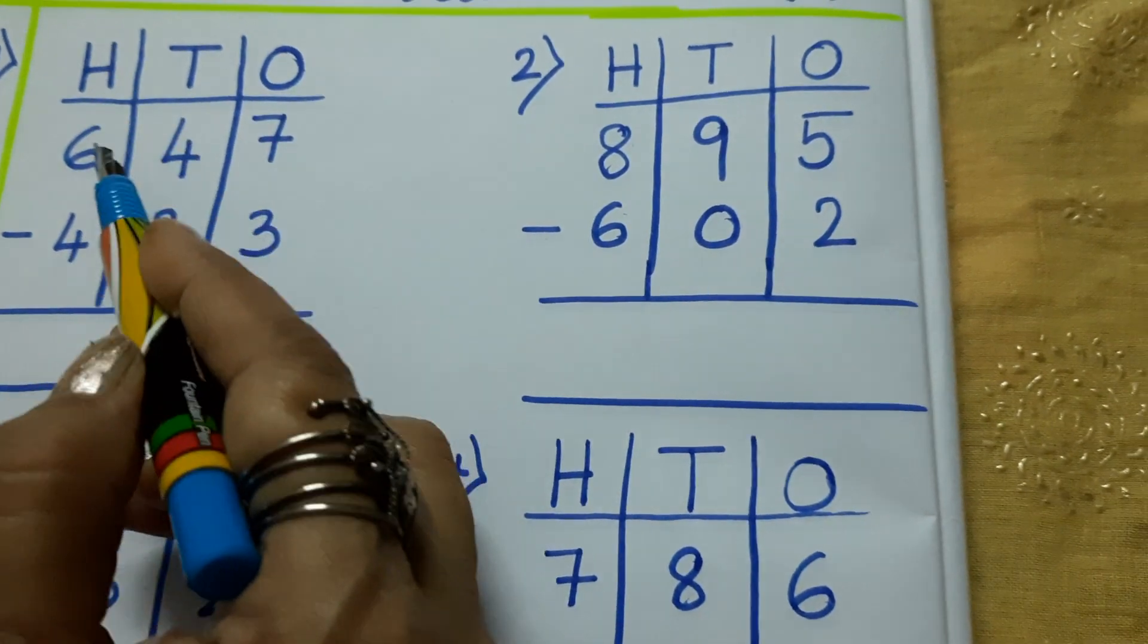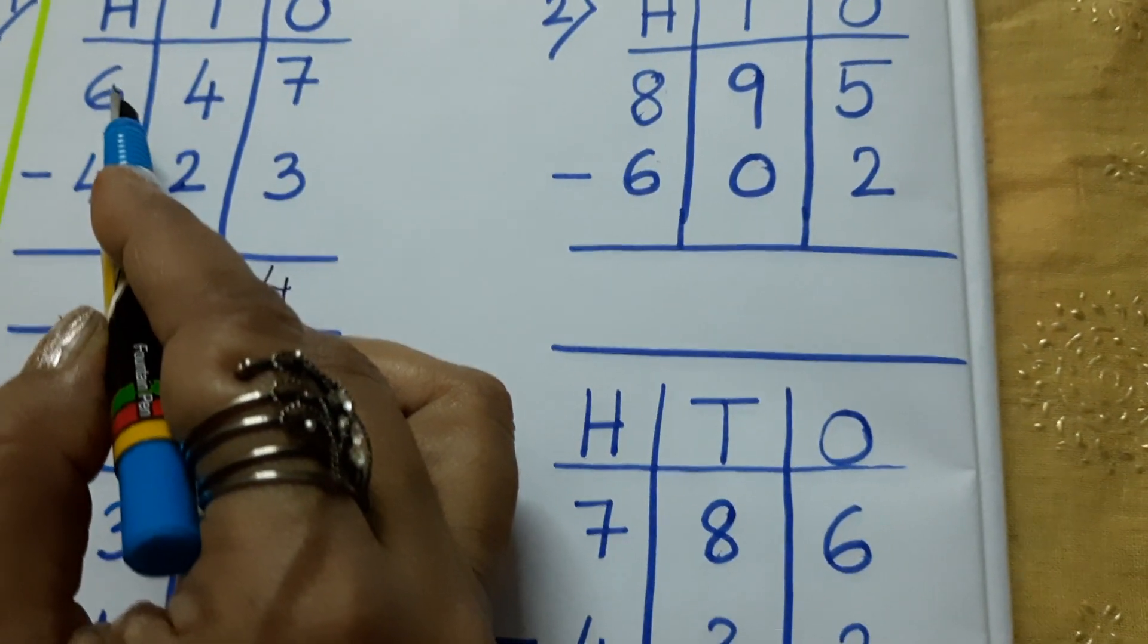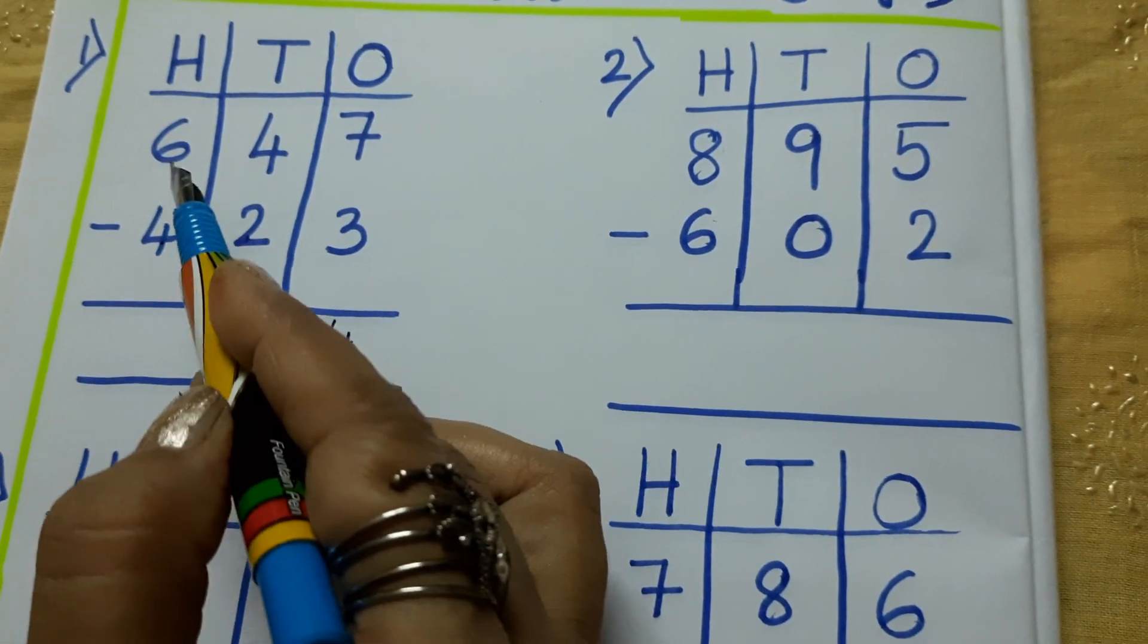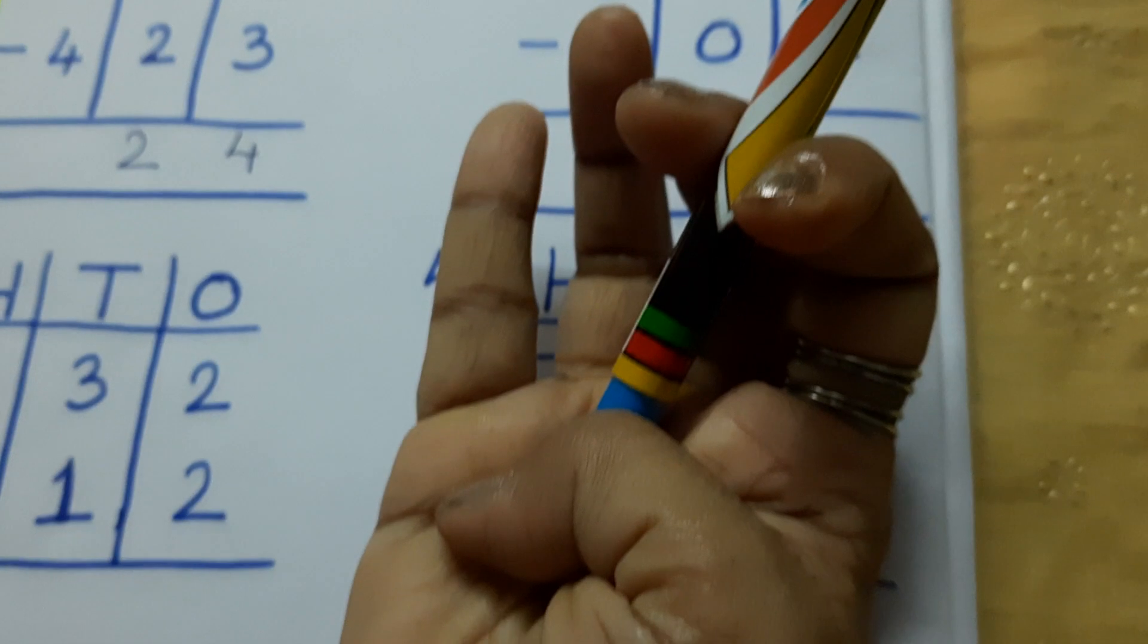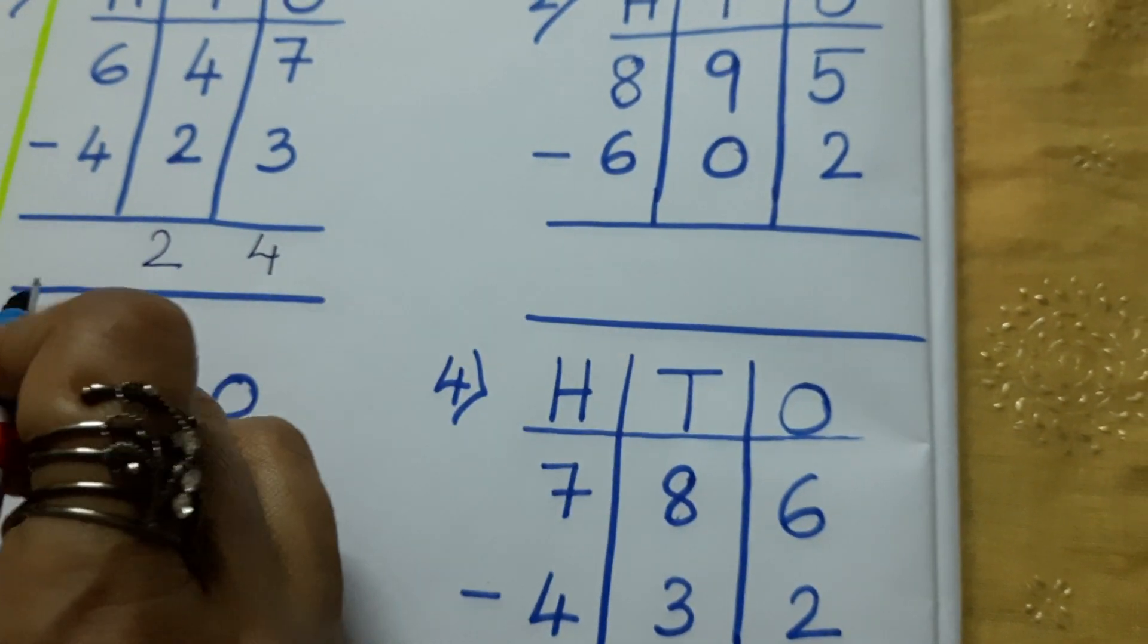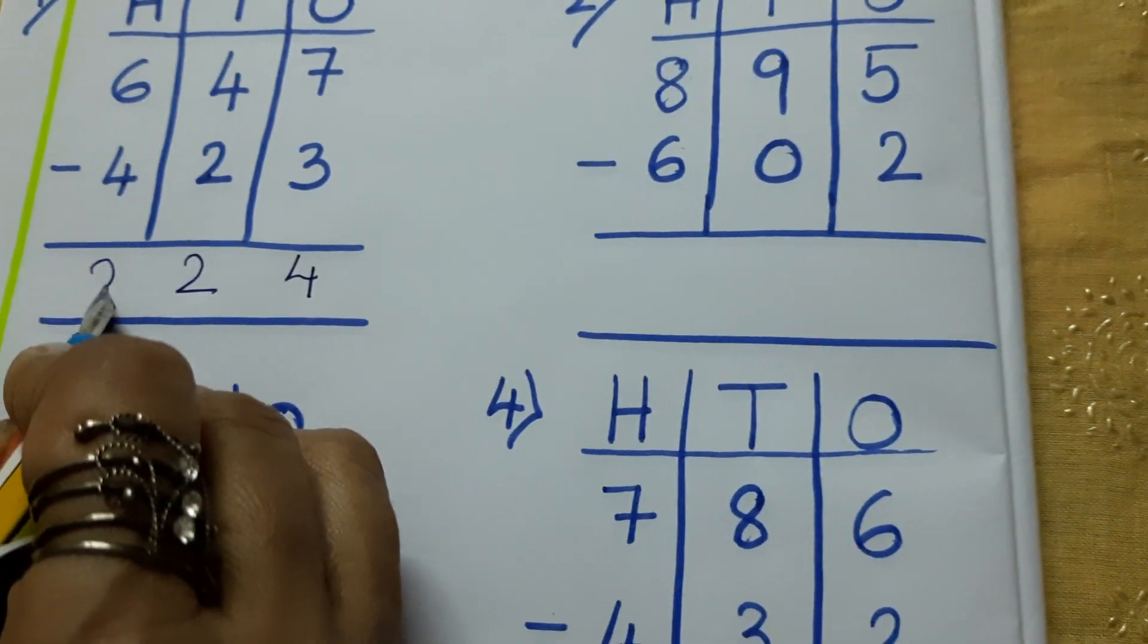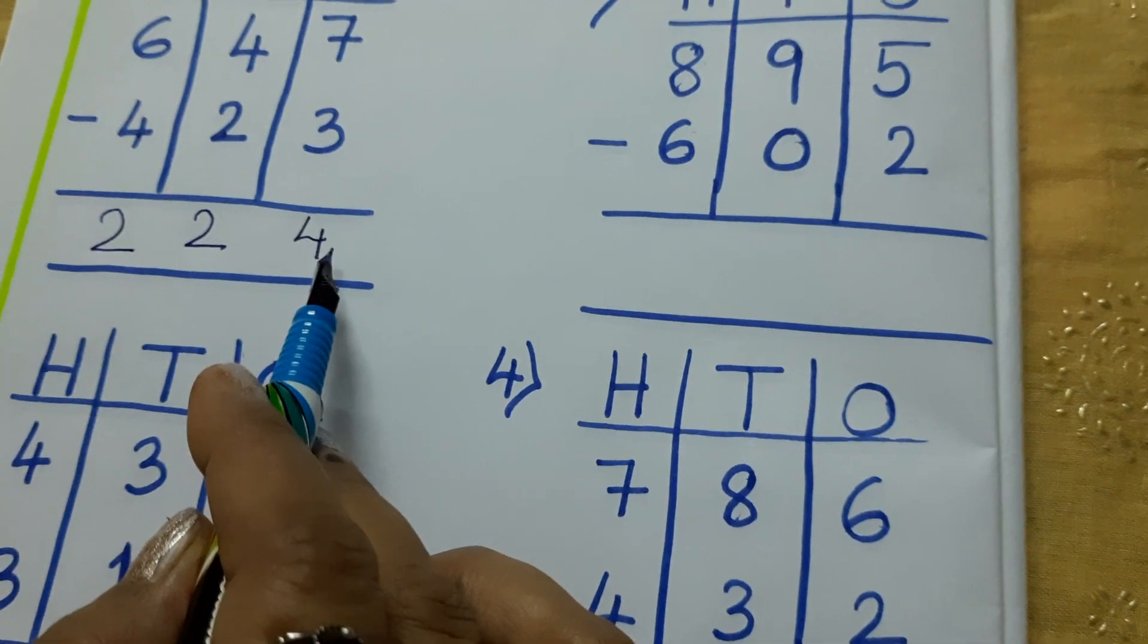In 100, it is written 6 minus 4. So, which one? 6 or 4? 4. Let me keep here 4. After 4, 5, 6. So, the answer is 2. 2, 2, 4.